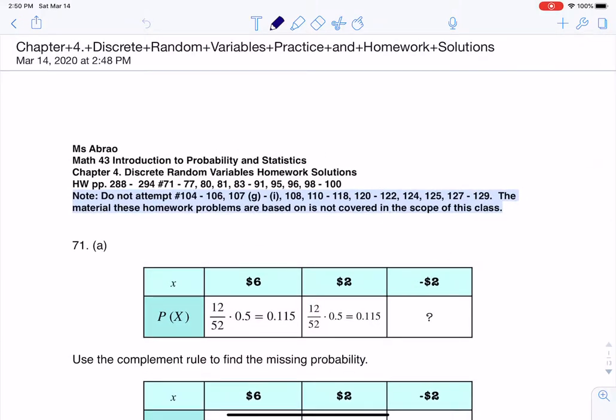Hey Math43, I had a question coming out of chapter 4, number 71. Here we were told that we were going to play a game that involved picking a card from a regular deck of cards and tossing a coin, and then we've got three outcomes. So if the card was a face card and the coin landed on heads, you won $6. If it was a face card and the coin landed on tails, you won $2, and everything else meant you lost $2.